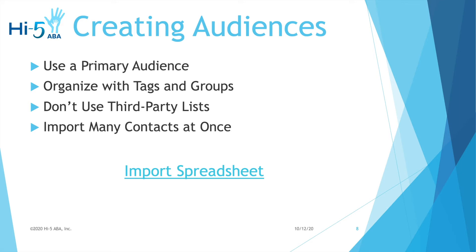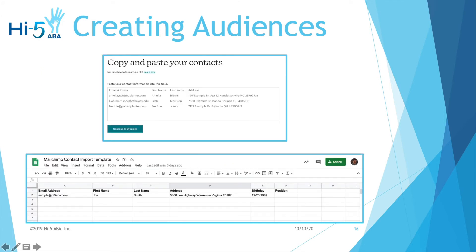Another tip for creating audiences is to import many contacts at once. You can generate new contacts one at a time, or you can copy and paste them in using the 'Import Spreadsheets' link. We have created a template spreadsheet with fields for first name, last name, email address, and a couple of other basic details such as physical address, and you can import all of those into Mailchimp. We can show you how to do that if you have any questions, or you can go to their tutorial and they can walk you through.